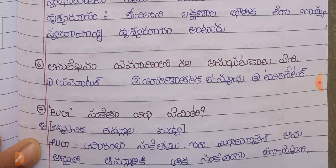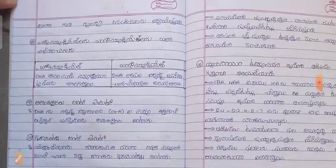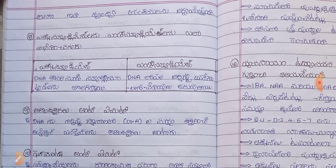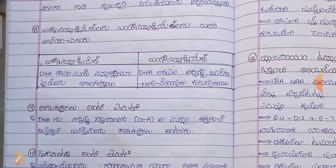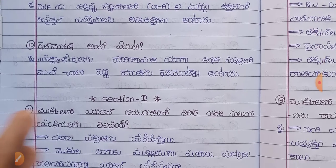The first start codon is called AUG — Prarambha Sanketam — which codes for Methionine. This is the first and primary start codon. Next, regarding Exonucleases and Endonucleases: Exonucleases cleave nucleotides from the ends of DNA, while Endonucleases cleave within the DNA strand. DNA is thus cut at specific positions by these enzymes.